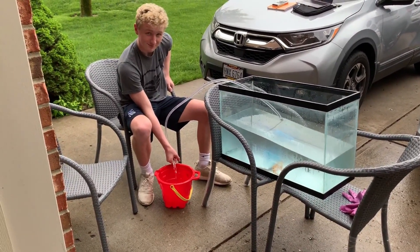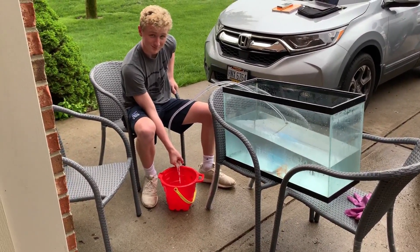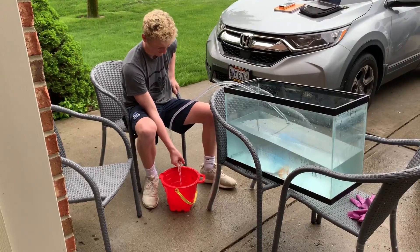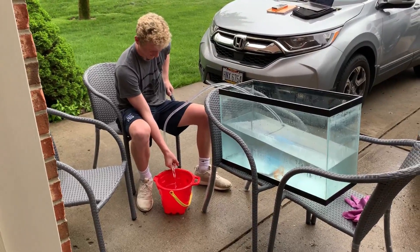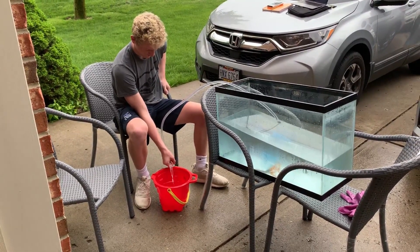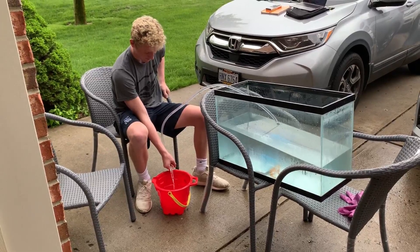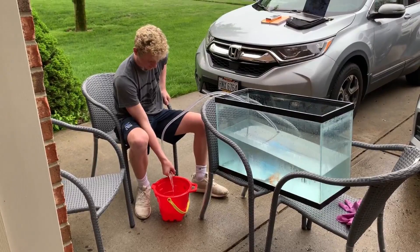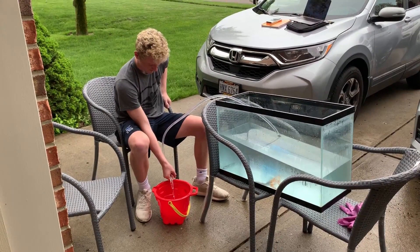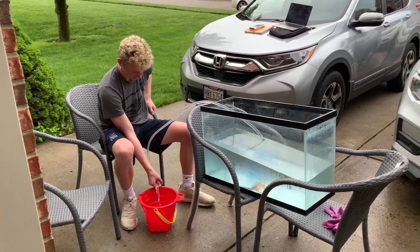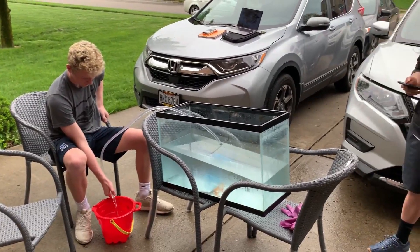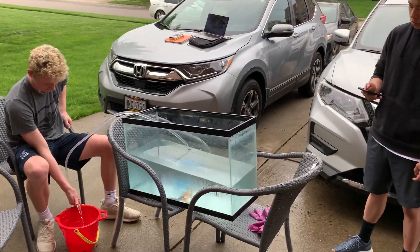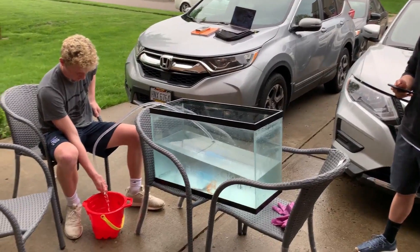To demonstrate Poiseuille's Law, we filled up a fish tank with water and got a small flexible transparent tube to siphon the water out. One part of Poiseuille's Law states that the rate of flow is inversely proportional to the length of tubing. To test this, we changed the length of the tubing and measured the rates of flow that corresponded with each of those lengths.